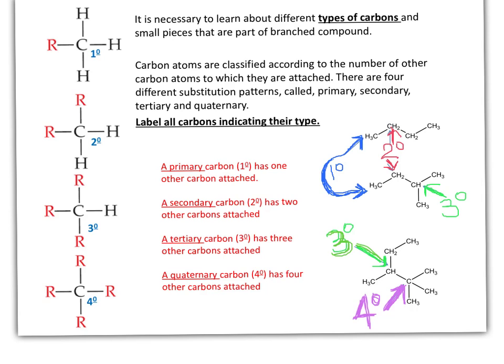There are four types of carbons and three types of alkyl groups. When a carbon is bonded to only one carbon, we call that a primary carbon. If the carbon is bonded to two carbons, that is a secondary carbon. If three carbons are bonded to it, it is a tertiary carbon. And when the carbon has no hydrogens but only carbons all around, it is called a quaternary carbon.